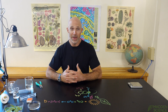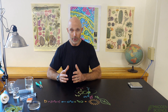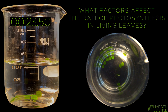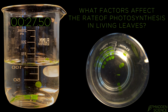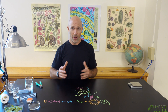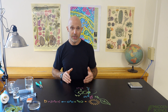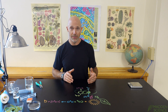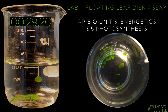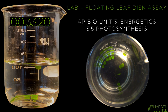Hey everybody, welcome to Madden Science. Today we're exploring photosynthesis with the AP biology lab. What factors affect the rate of photosynthesis in living leaves? This lab is often called a floating leaf disc assay, and it falls into Unit 3 Energetics under 3.5 Photosynthesis.